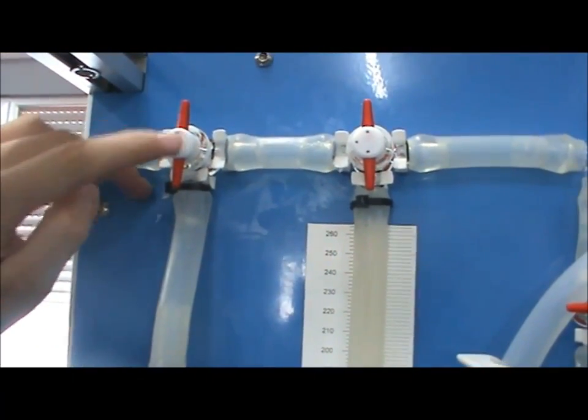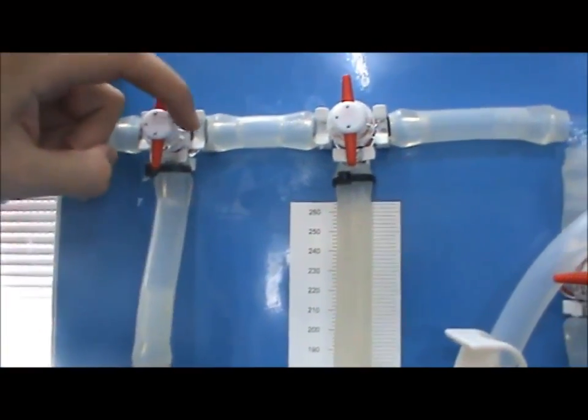Each valve has three dots which show the path of the airflow. The side without the dot is closed.